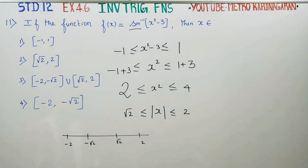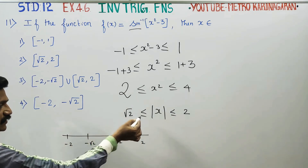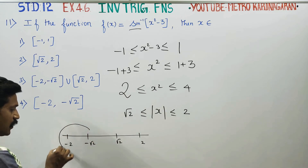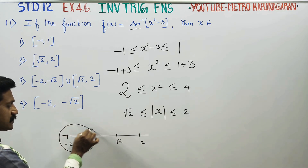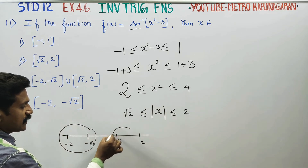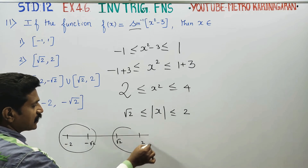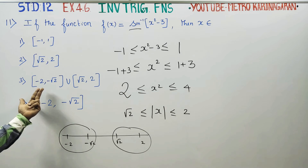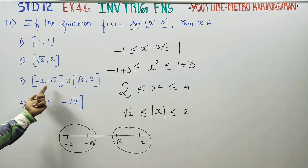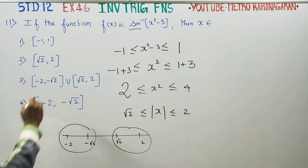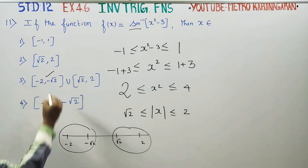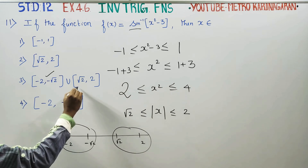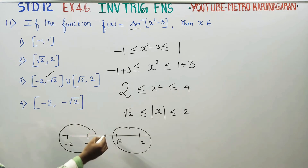Looking at the intervals, you can see there are two intervals: minus 2 to minus root 2 is one interval, and root 2 to 2 is the other. The answer is their union.